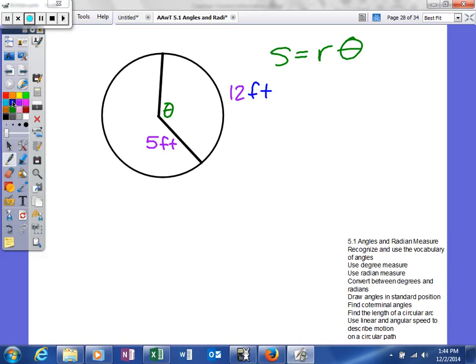So we're going to plug those values in. So what we'll do is we'll say 12 feet, which is our arc length, is equal to our radius of 5 feet times our angle. And we're trying to solve for our angle. So what we'll do next is divide both sides by 5 feet.